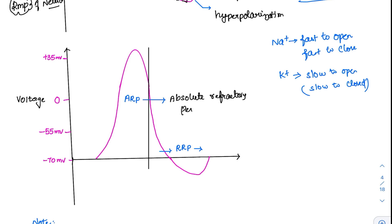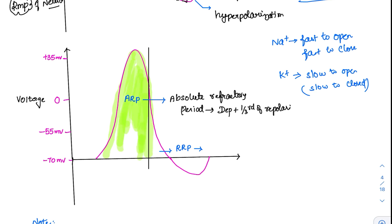The absolute refractory period covers the duration of depolarization plus one-third of repolarization — as seen in the diagram, the green-shaded first area up to the black line. The yellow area that follows is the relative refractory period, which covers the remaining two-thirds of repolarization. During this second two-thirds, if a strong stimulus is given, the same cell can be excited again — that is why it is called the relative refractory period.